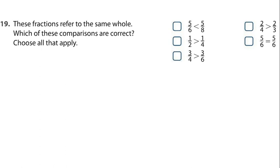Is 1 over 2 greater than 1 over 4 — true or false? True, so I will choose it. Is 3 over 4 greater than 3 over 6 — true or false? True also, because 4 is less than 6. Is 2 over 4 greater than 2 over 3 — true or false? False, because 2 over 3 is greater than 2 over 4.